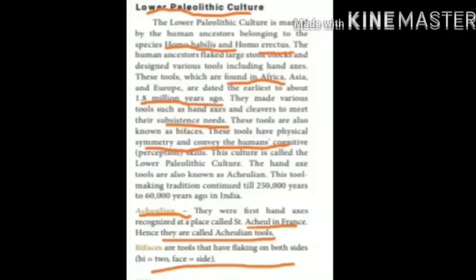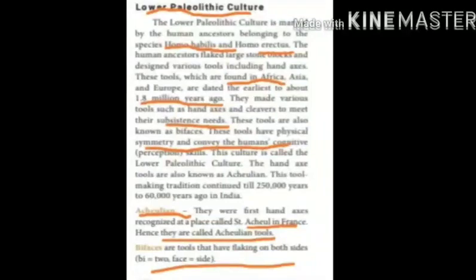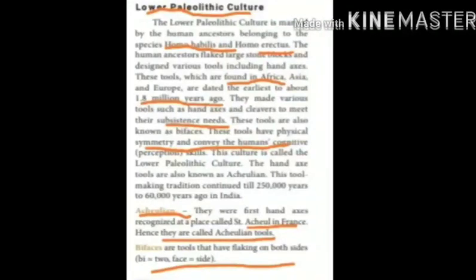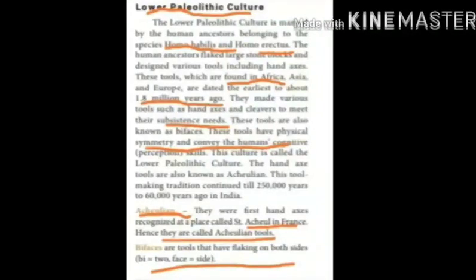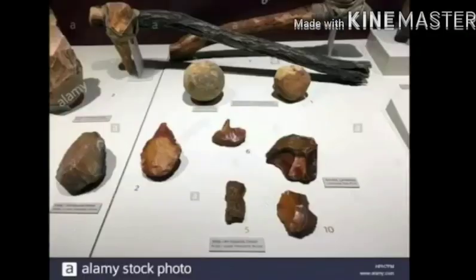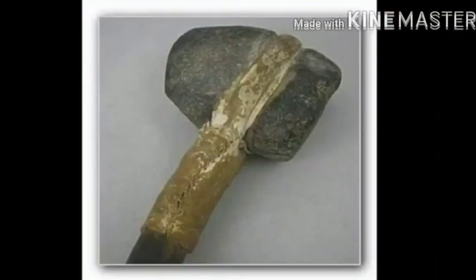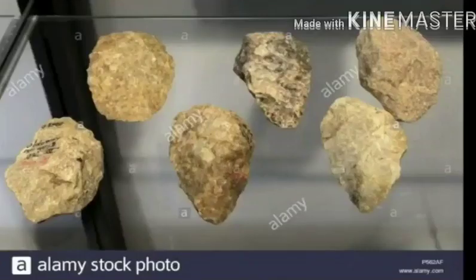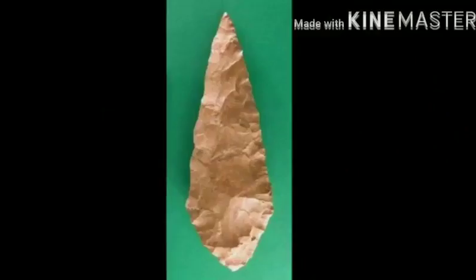Now we will see about Lower Paleolithic Culture. The Lower Paleolithic Culture is marked by the human ancestors belonging to the species Homo habilis and Homo erectus. The human ancestors flaked large stone blocks and designed various tools including hand axes. These tools, which are found in Africa, Asia and Europe, are dated in the earliest to about 1.8 million years ago.